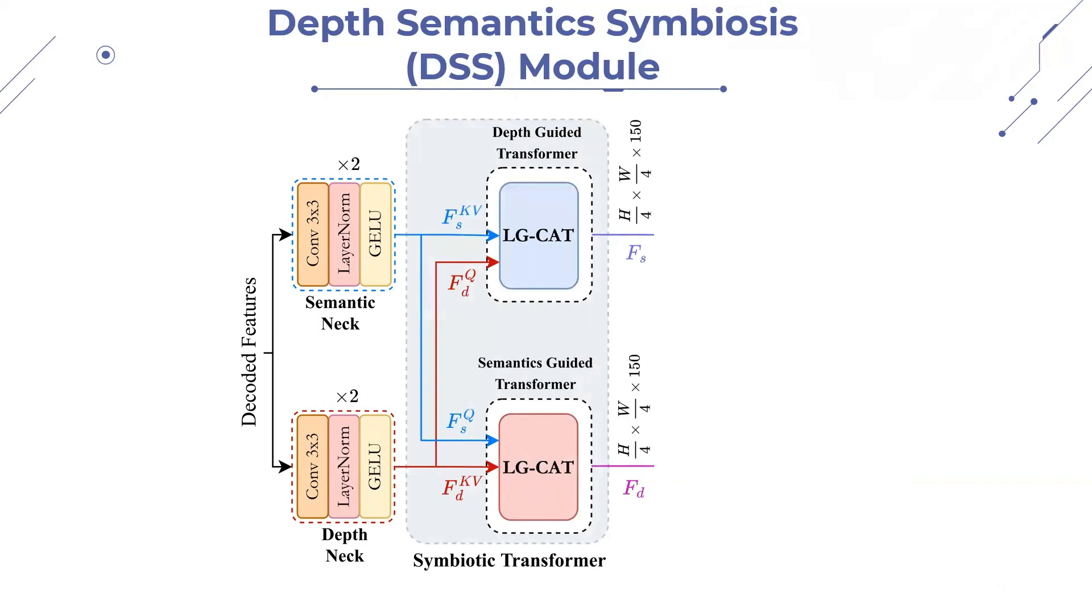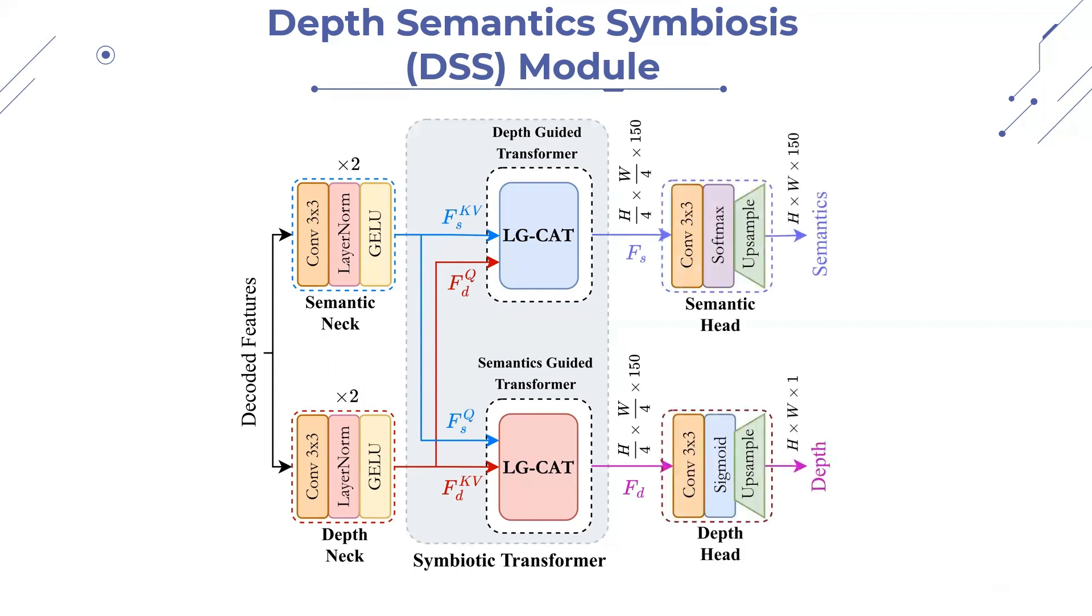These features are fed into symbiotic transformer for information sharing within both local and global contexts, resulting in depth-aware semantic and semantic-aware depth features. The symbiotic transformer, which is responsible for symbiosis, comprises two transformers, depth-guided transformer and semantics-guided transformer, which are both instances of LGCAT but serve different purposes. One takes depth as the query and semantics as key value, while the other one does the opposite. Then the separate head blocks refine these mutually-aware features, generating the final depth map and semantics mask.